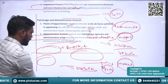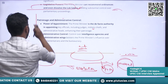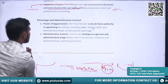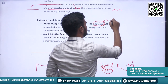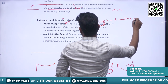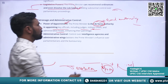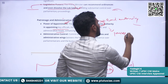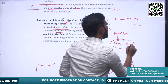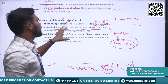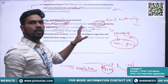Now we will understand the patronage and administrative control of the Prime Minister. Regarding power of appointment: he is the de facto authority in appointing key officials including judges, military chiefs, and administrative heads. While the President formally appoints these officials, the Prime Minister heading the Council of Ministers recommends the appointments. He also has control over intelligence agencies and administers all other important administrative wings.